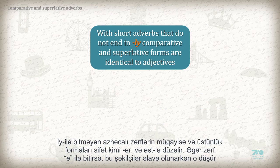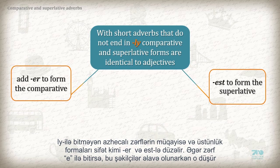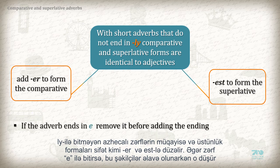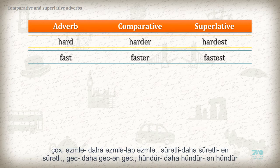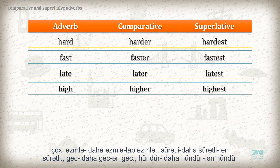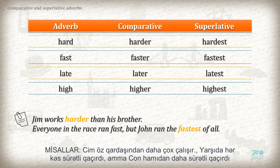With short adverbs that do not end in -ly, comparative and superlative forms are identical to adjectives — add -er to form the comparative and -est to form the superlative. If the adverb ends in -e, remove it before adding the ending. For example: hard → harder → hardest; fast → faster → fastest; late → later → latest; high → higher → highest. Examples: 'Jim works harder than his brother.' 'Everyone in the race ran fast, but John runs the fastest of all.'